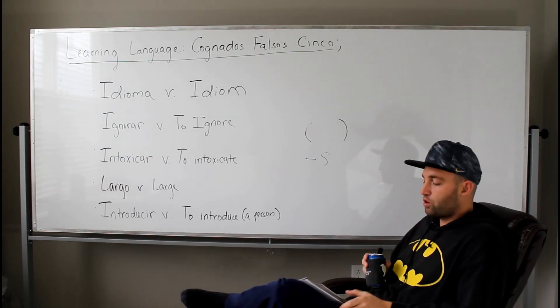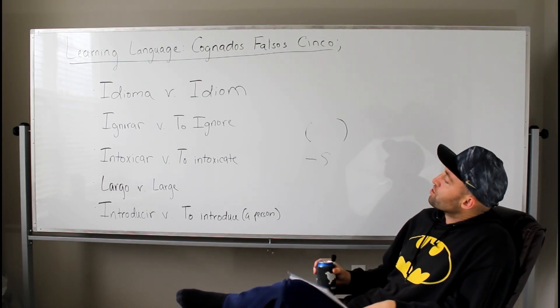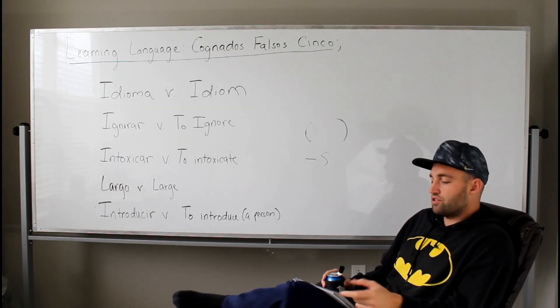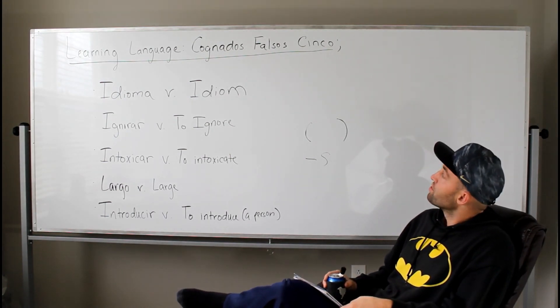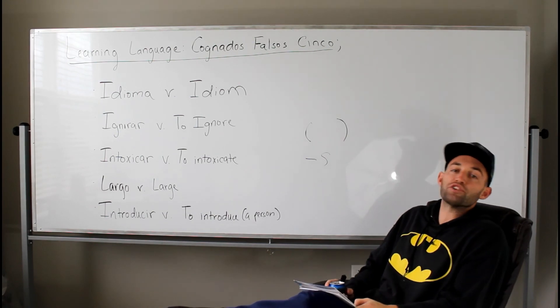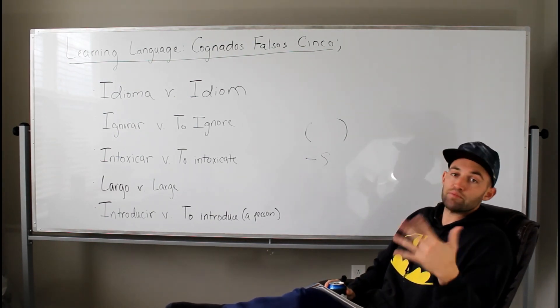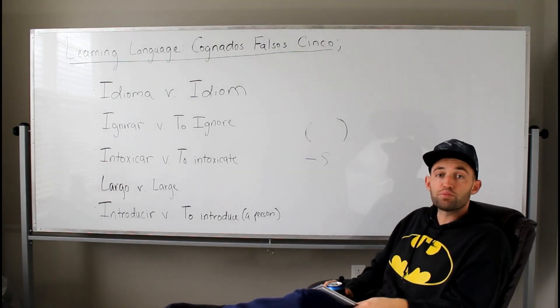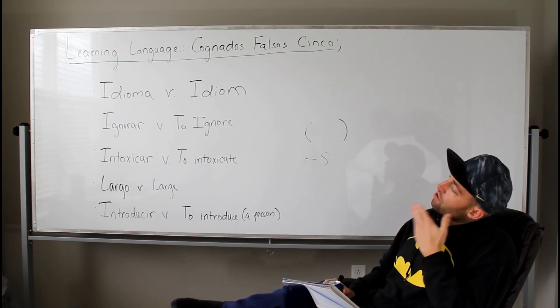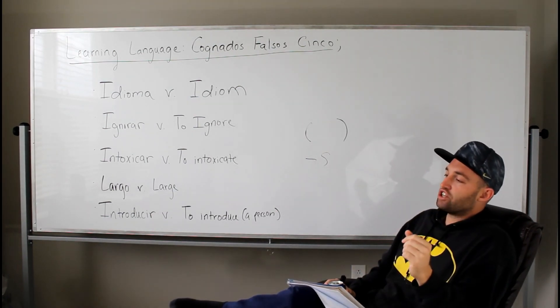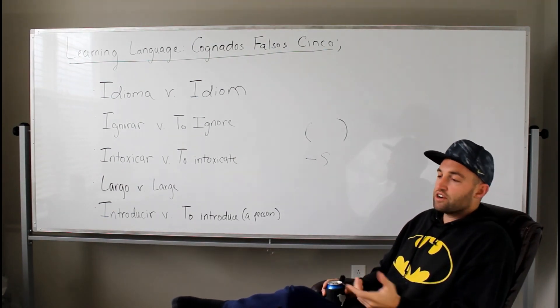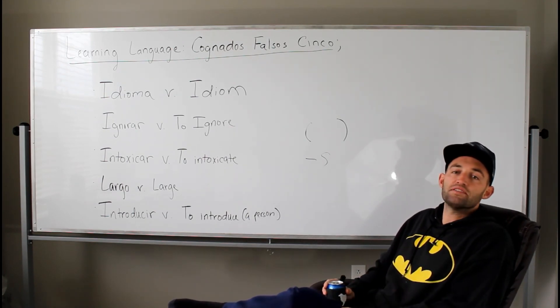So those are my cinco cognatos falsos para today. Hope you learned something. Again, just trying to give you more context in where these words really get solidified. It's not that I disagree with the, again, I disagree with the classification of cognatos falsos. You guys just aren't clearly differentiating the context in which these phrases are being used. So I hope you learned something on learning language cognatos falsos cinco. And happy, I didn't even know this was Spanish Heritage Month. It's 12 months. Please educate yourselves. Please learn. Then maybe I will have a family form of 35 because people will respect their own laws. Probably not, though. Thanks for watching.